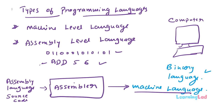However, assembly level language also had difficulties. Although it was easier to write programs than in machine level language, as the program size increases it becomes difficult to spot errors. Also, code written in assembly level language is computer architecture dependent — code written for one type of computer cannot be executed on another type with a different architecture. To solve these problems, a new type of language was invented so that many more people could write programs: the higher level languages.